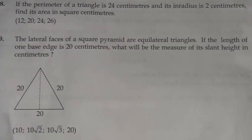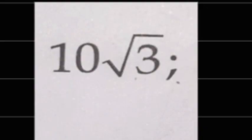Question 9: The lateral faces of a square pyramid are equilateral triangles. If the length of one base edge is 20 cm, what will be the measure of its slant height in cm? Options: 10, 10 root 2, 10 root 3, 20. Answer: 10 root 3.